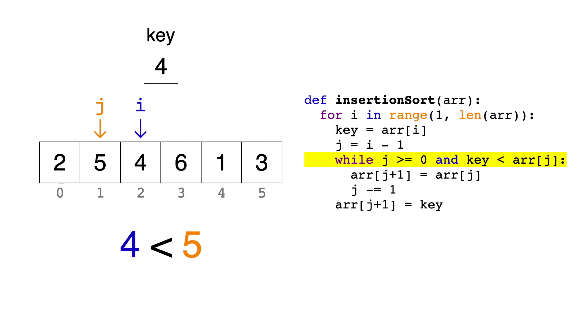4 is less than 5, so let's enter the while loop. We'll set the j plus 1th item equal to the jth item, just like this, and decrement j. When we return to the top of the loop, we find that 4 is not less than 2, so we're done. We exit the loop, and set the j plus 1th item equal to key. The first three items are now sorted.